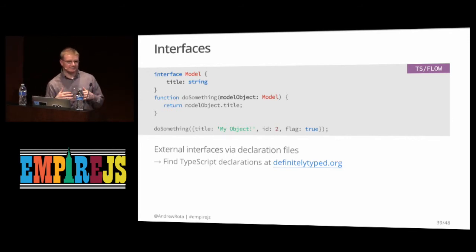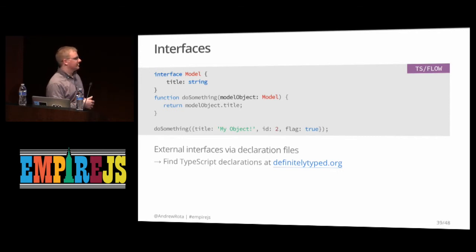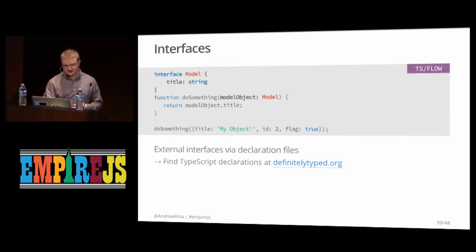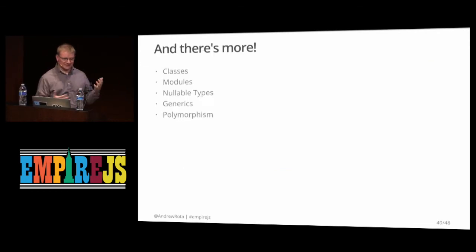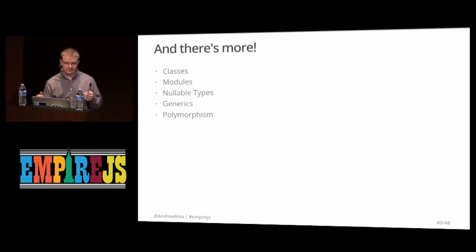Taking this further, we get the real power of typing — interfaces. Instead of repeating object shape annotations, we can abstract them into an interface. The type transformer deletes interfaces at compile time, but until then they give the type checker information about the expected shape of objects. TypeScript has a big advantage here because there's a large community of TypeScript declaration files — collections of interfaces for libraries we already use like Ember, Angular, Backbone, jQuery, and Underscore. There's likely a declaration file out there for whatever library you use.